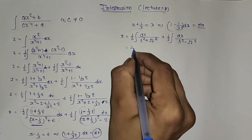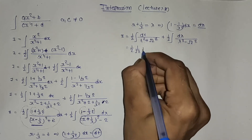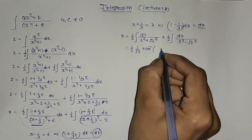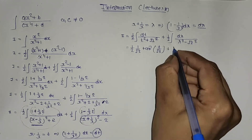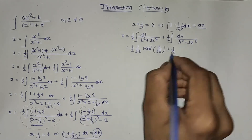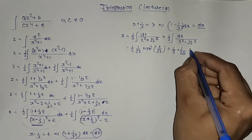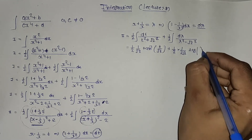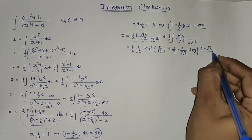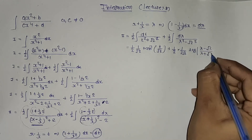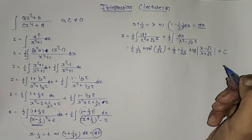It is easy to solve: (1/2) · (1/√2) · tan⁻¹(t/√2) plus (1/2) · (1/(2√2)) · log|(λ - √2)/(λ + √2)| + C.